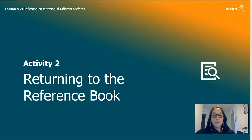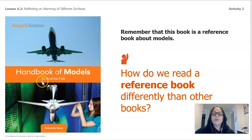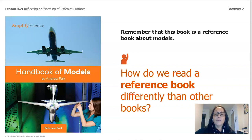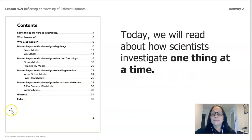We're going to return to the reference book. In this reference book we're going to find out a lot of information regarding models. The title is the Handbook of Models and it's called a reference book. How do we read a reference book differently than other books? The first thing we do is look at the table of contents.